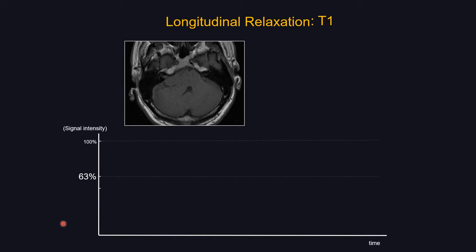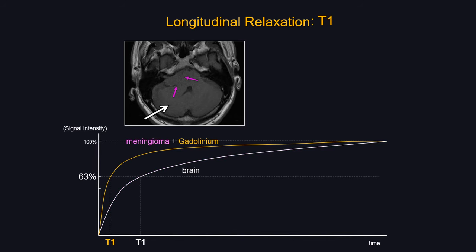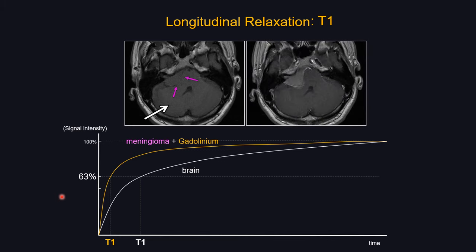Different tissues have different T1 recovery times. Fat recovers much faster than CSF, so fat has a much shorter T1 time than CSF. Shorter T1 time means brighter signal on T1-weighted images — fat has T1 shortening compared to CSF. Fat looks bright on T1, CSF looks dark. We can utilize these differences in T1 recovery curves to give us T1 contrast. For example, gadolinium has a significantly shorter T1 time than brain tissue and cannot escape through an intact blood-brain barrier, so it doesn't enter normal tissue but does enter meningioma — making it light up on post-contrast T1. T1 shortening shifts the curve to the left, making tissue brighter on T1-weighted images.